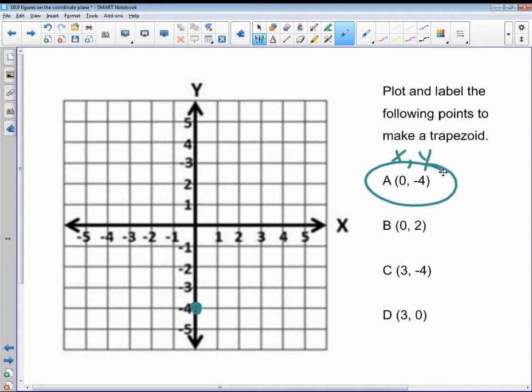Now I'm going to label this a, now I'm going to go to b. I'm not going to go over at all, zero, but I'm going to go up two. And this is b. Notice I'm labeling it.